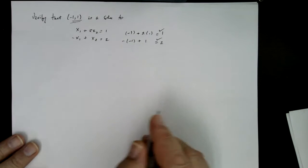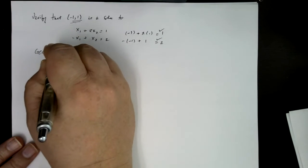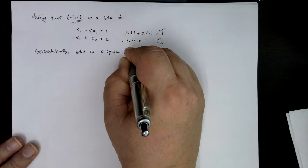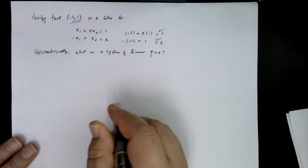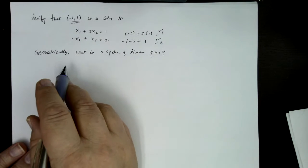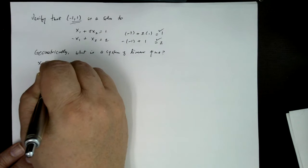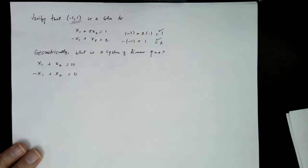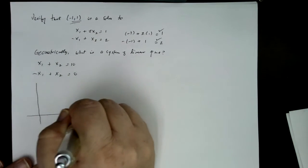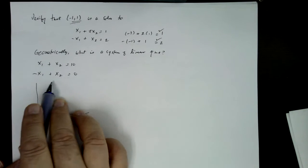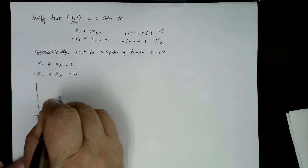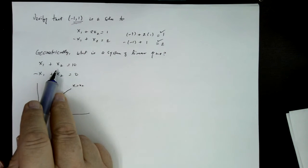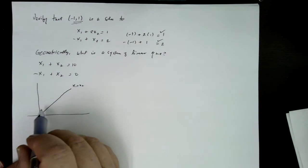So now we can ask geometrically, what are we doing? What is the system of linear equations? And so we're going to answer that by first taking a look at some two-by-twos. So how about something like x1 plus x2 equals 10, and then minus x1 plus x2 equals 0. So geometrically, what is this? Well, minus x1 plus x2 equals 0 is just a line, y equals x. So that's going to look like that, along the line y equals x, where x1 equals x2.